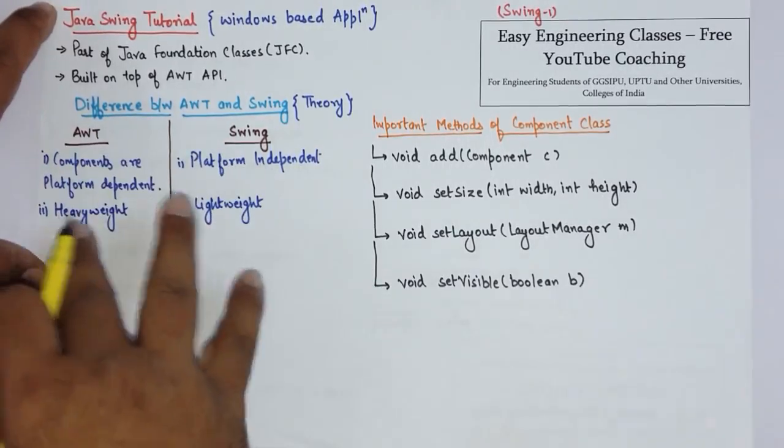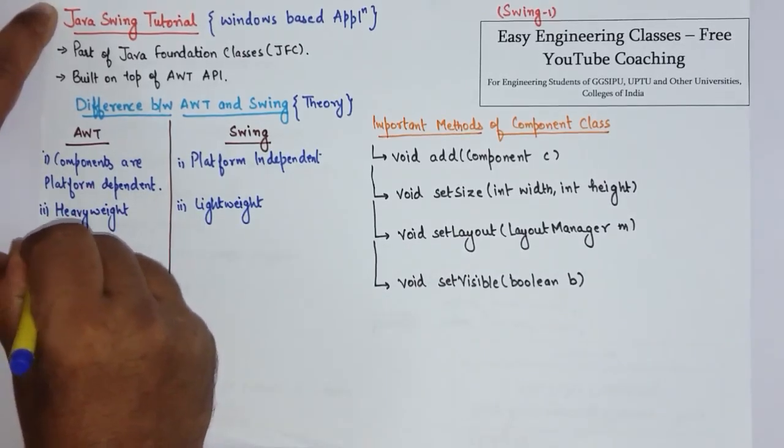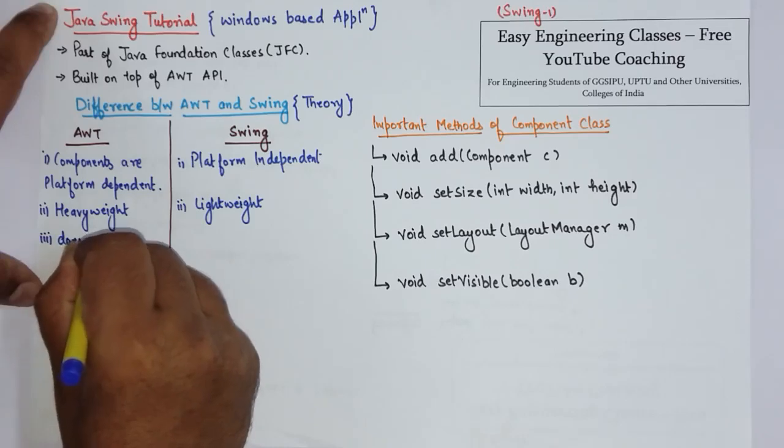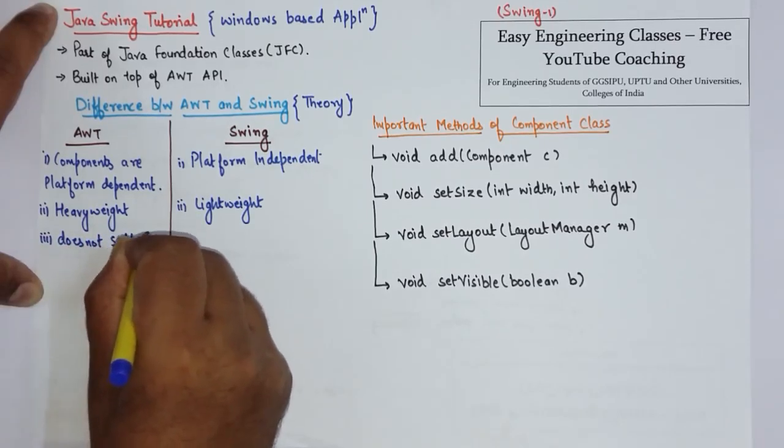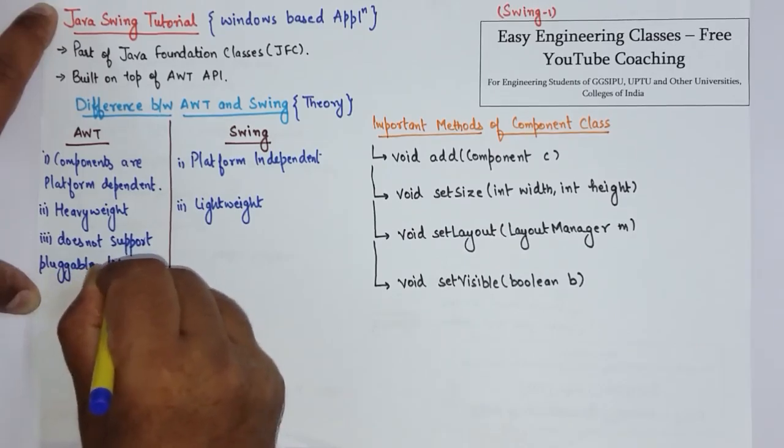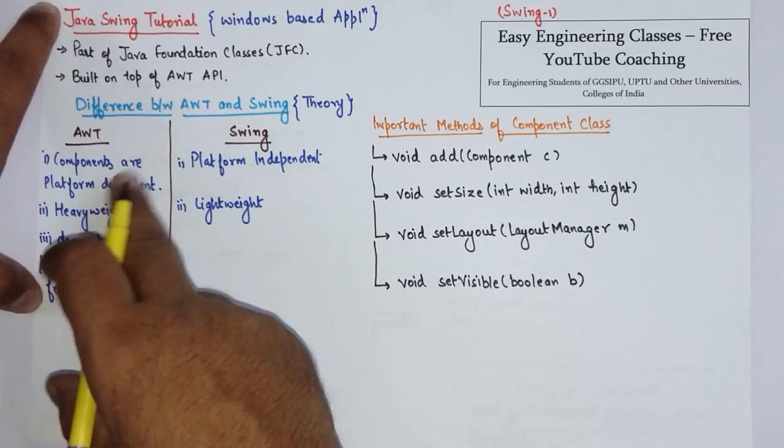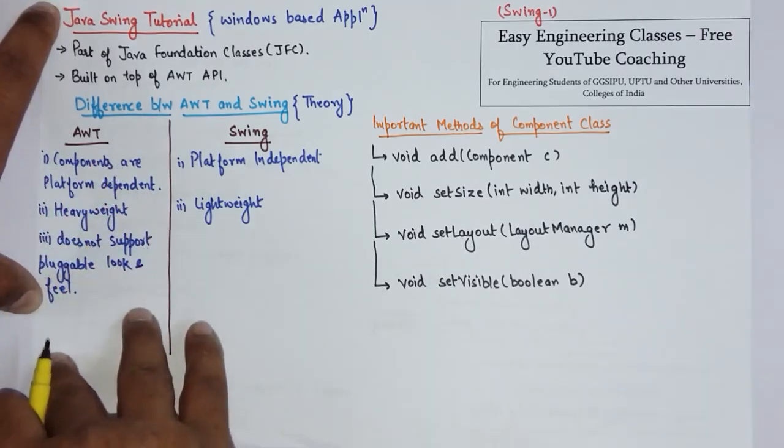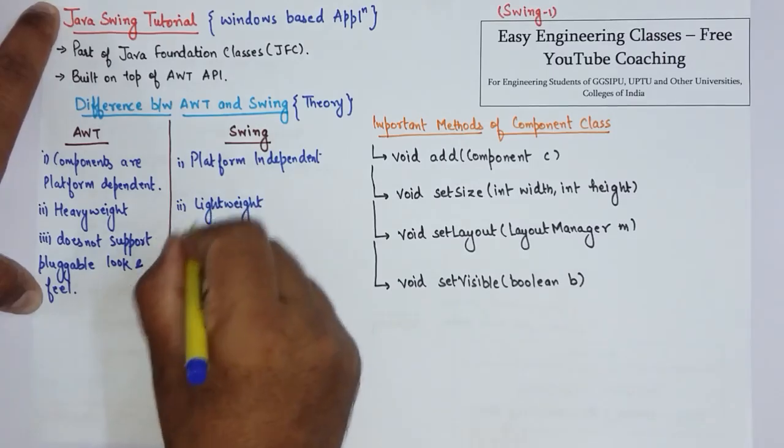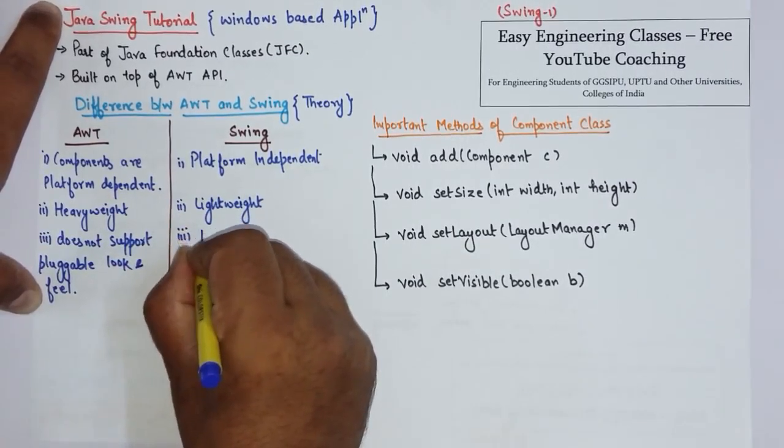Which means they need less resources to perform. Third, AWT does not support pluggable look and feel. By pluggable look and feel it means that if you have developed an AWT application in one OS, you cannot expect the same look and feel in another OS, whereas Swing supports pluggable look and feel.